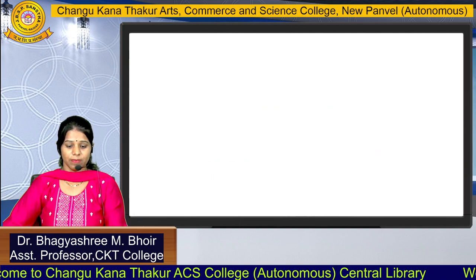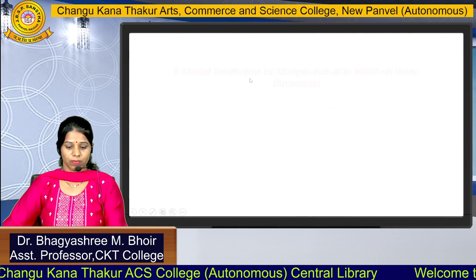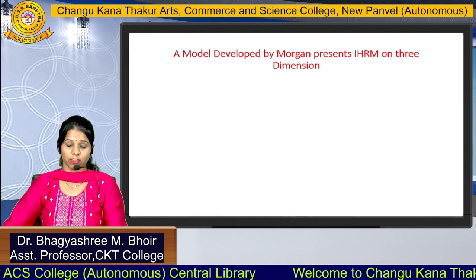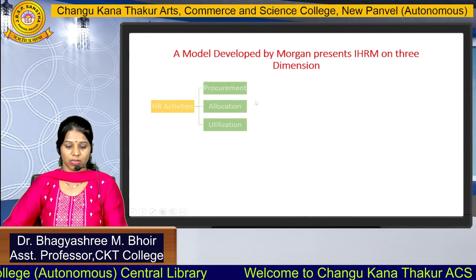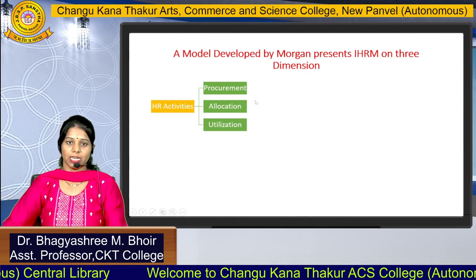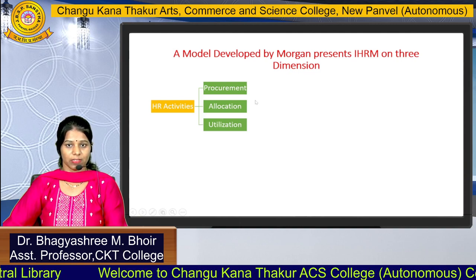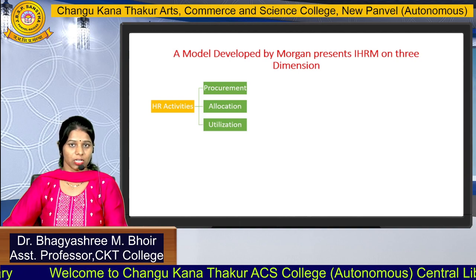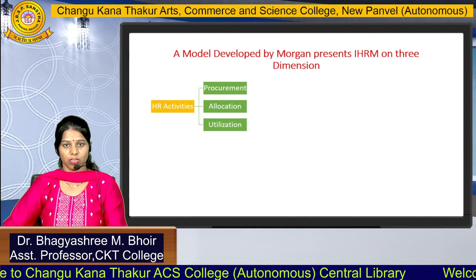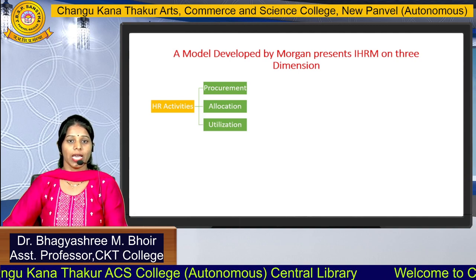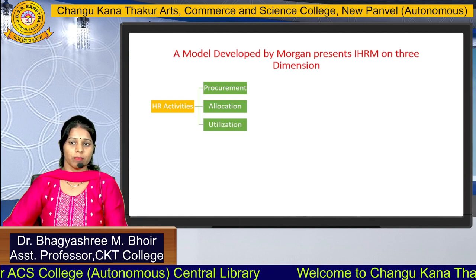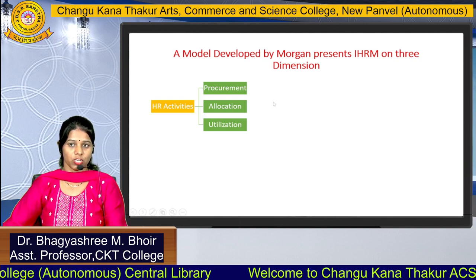Next is the model developed by Morgan presenting IHRM on three dimensions. The first dimension is HR activities, which involve procurement, allocation, and utilization. We have to do human resource planning, allocate the job to each and every employee — what type of job they have to do — and effectively utilize their resources for managing their job.